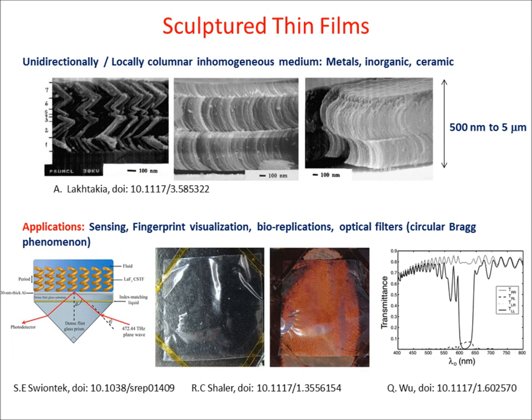Let me begin by telling you about some inhomogeneous thin films called Sculptured Thin Films. These films consist of nanofibers of different morphologies such as chevron, chiral, and columnar. These films have had their share of applications in optics and for sensing applications, and have even been applied in forensic science for visualization of latent fingerprints.